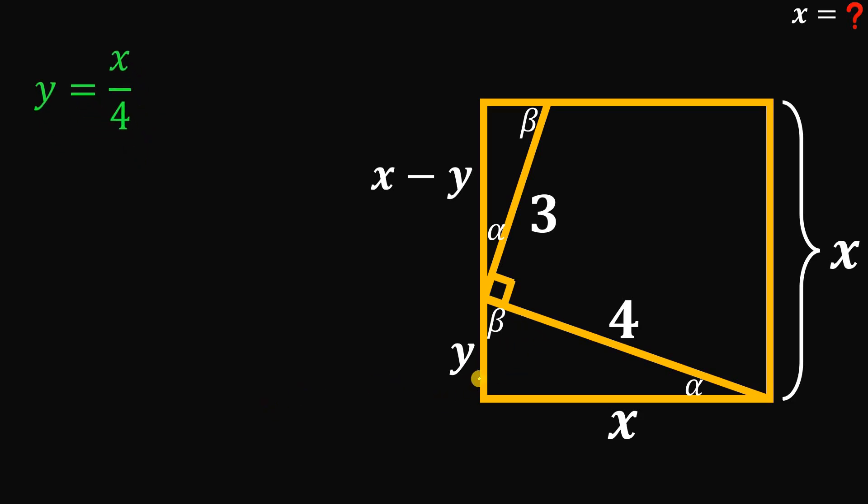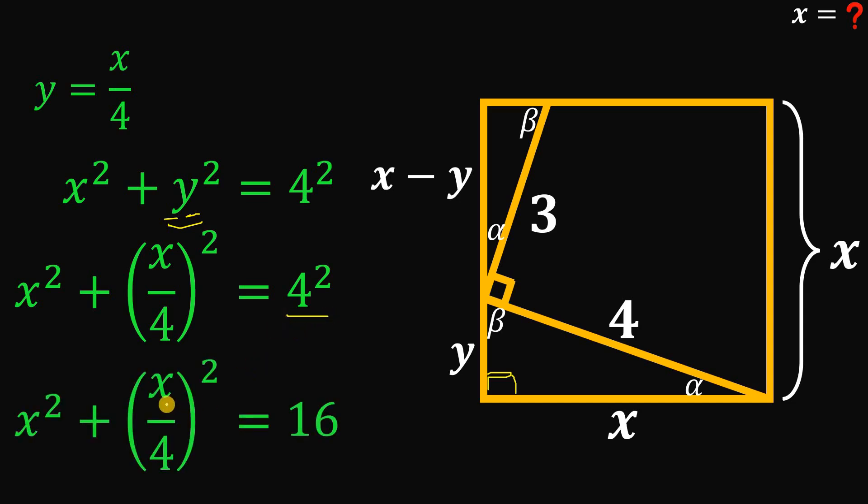Now from here, using this right triangle with a side length of 4, x and y, using Pythagorean theorem, we have x squared plus y squared equals 4 squared. But we know that this y is x over 4. So we can replace this y with x over 4. Now simplifying this, 4 squared is just 16. We all know that. And let's focus on this result.